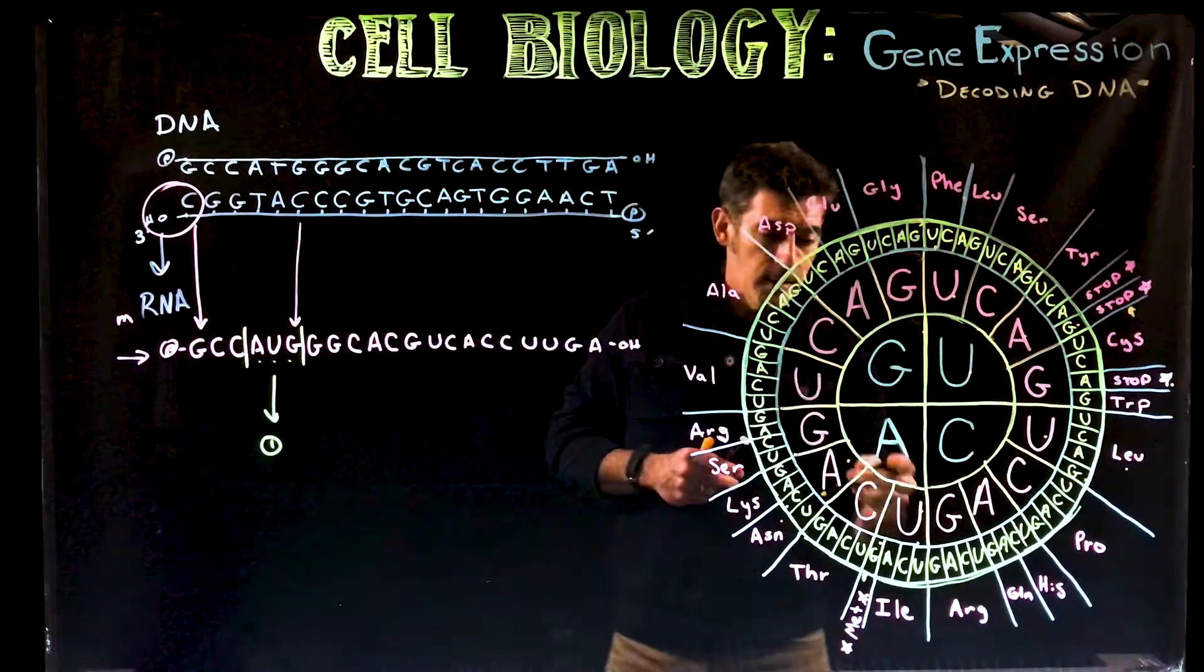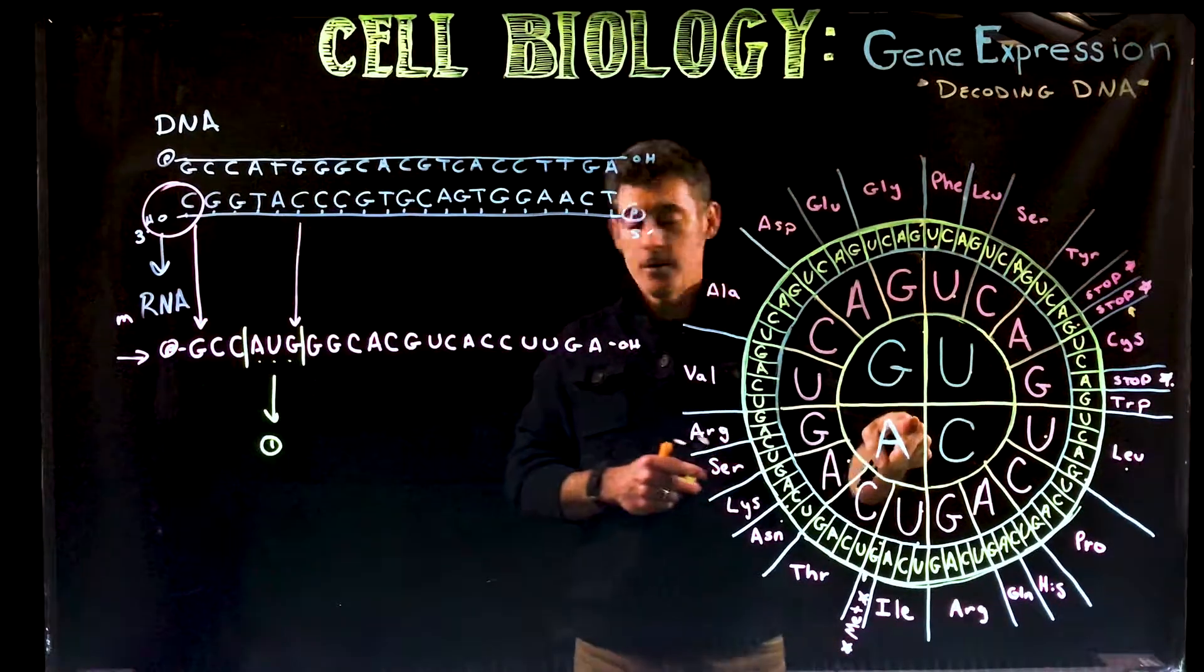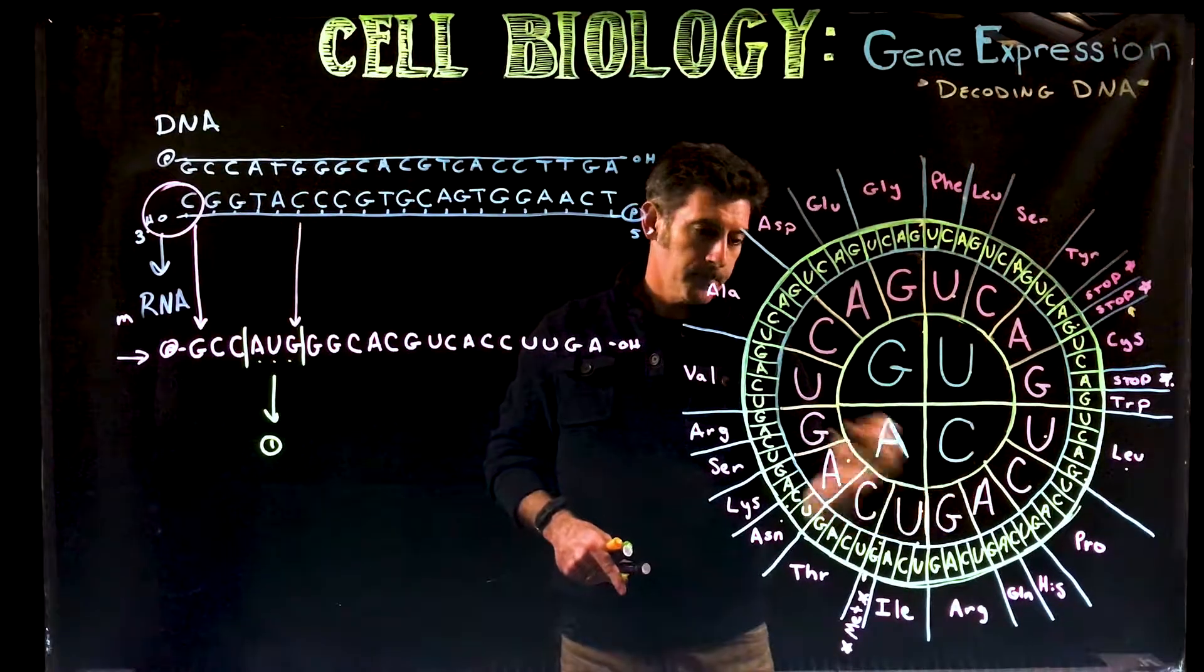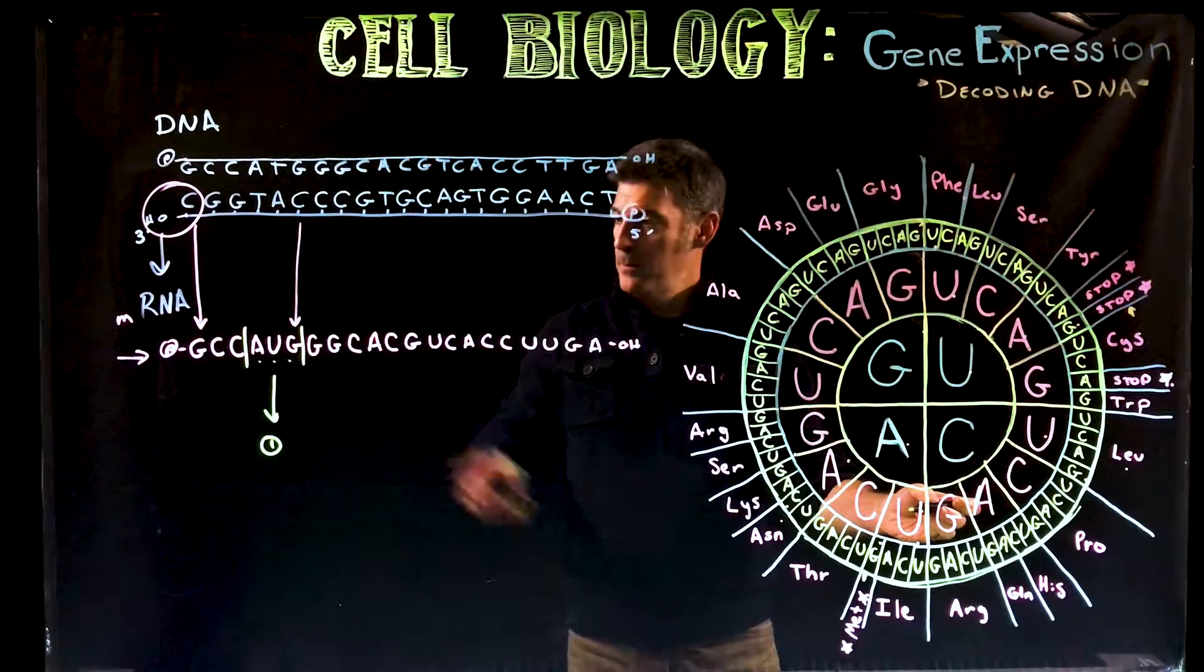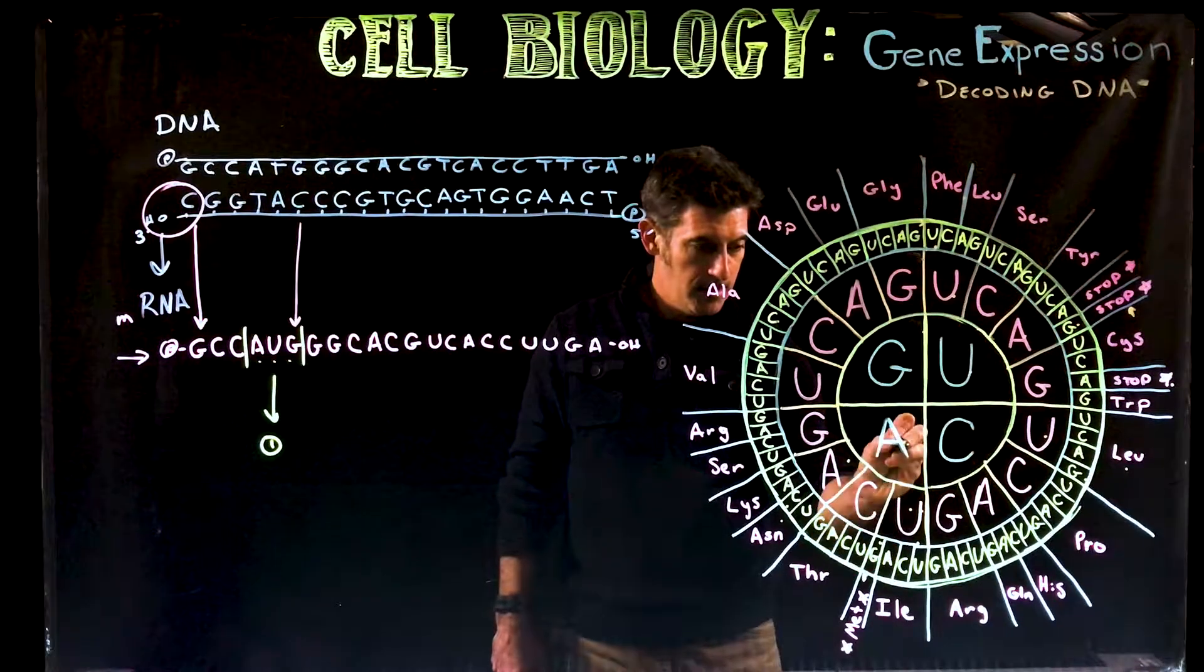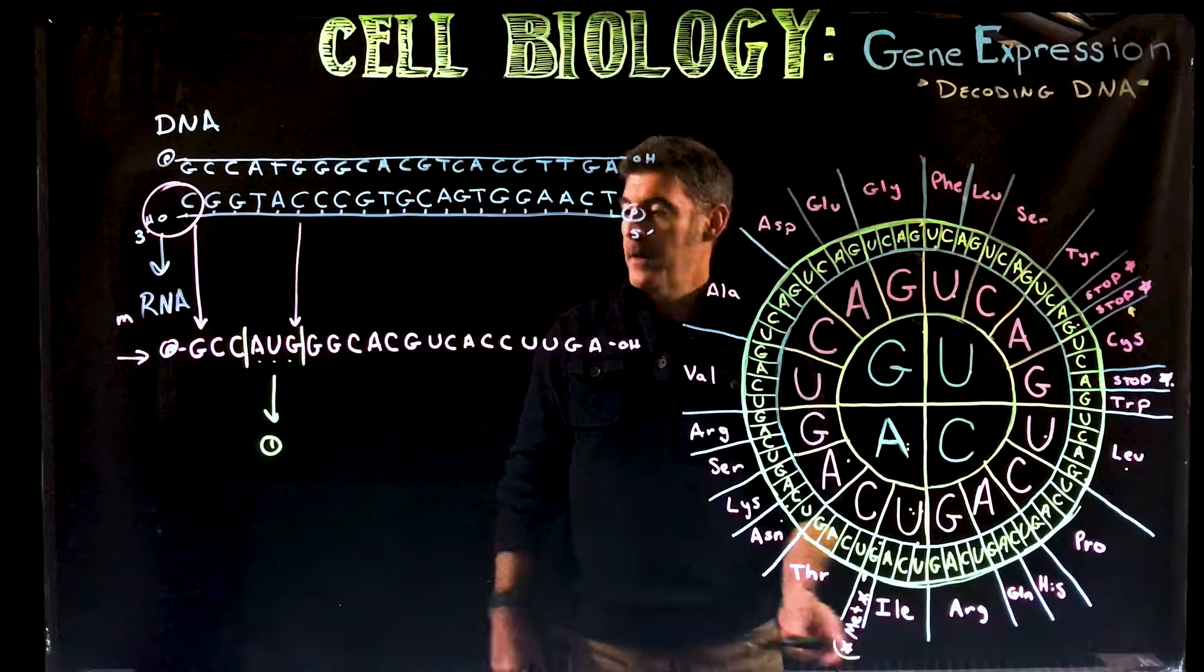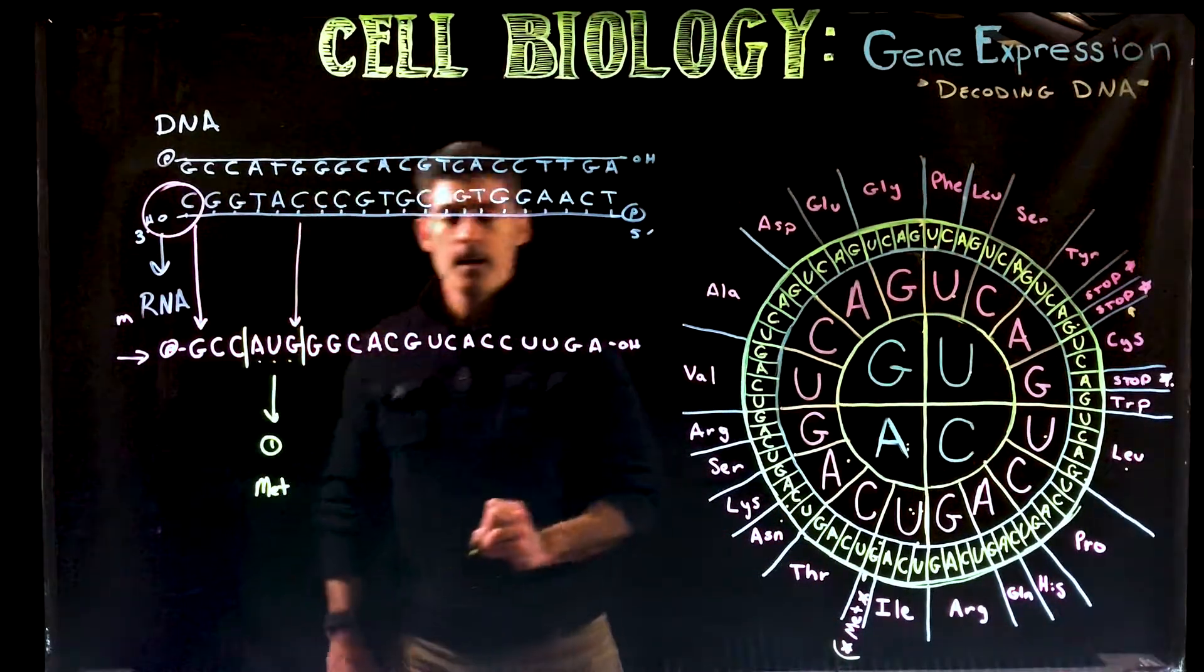So AUG, that's the first codon, the first three nucleotides. We go over to this table. The largest ones here in the center, that's the first nucleotide, A. The second one's a U, so we go here to this group of four: U, C, A, G. It's A, U, and then G. There's another group of four: U, C, A, G. So A, U, G is methionine. We know this is the first amino acid, methionine.